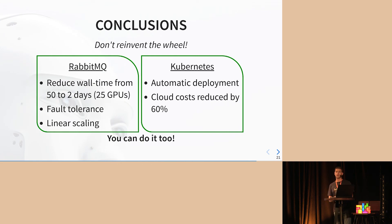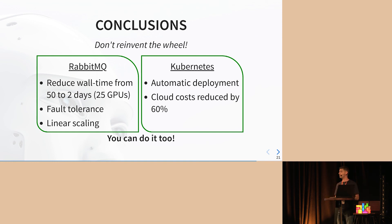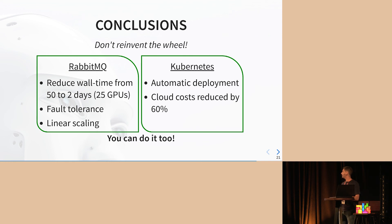In conclusion, we have learned to not reinvent the wheel. With RabbitMQ, we reduced the total computation time for the search from 50 days to two days — a very big deal for us. We had fault tolerance, and we also reduced our cloud costs by 60%. And if we can do it, you can do it too.